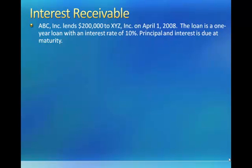For the first example — interest receivable — let's consider ABC Inc. lending $200,000 to XYZ Inc. on April 1, 2008. The loan is a one-year loan with an interest rate of 10%, with principal and interest due at maturity. That means on April 1, 2009, XYZ will have to return the $200,000 to ABC along with $20,000 in interest — 10% of $200,000 — so they'll have to return $220,000 to ABC.